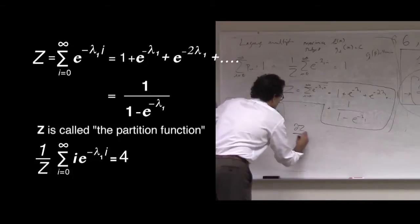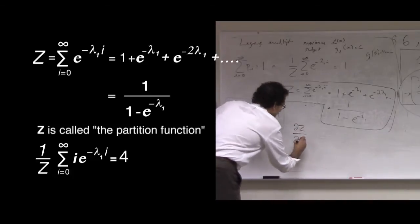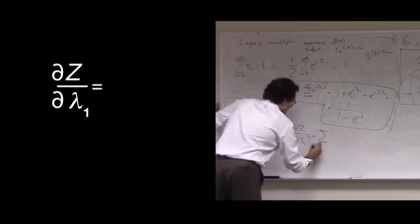Derivative of z with respect to lambda 1. Derivative of z with respect to lambda 1, what happens is the following. Well, you get a negative sign, you get the sum, and now what you've done is you've pulled down a factor of i.